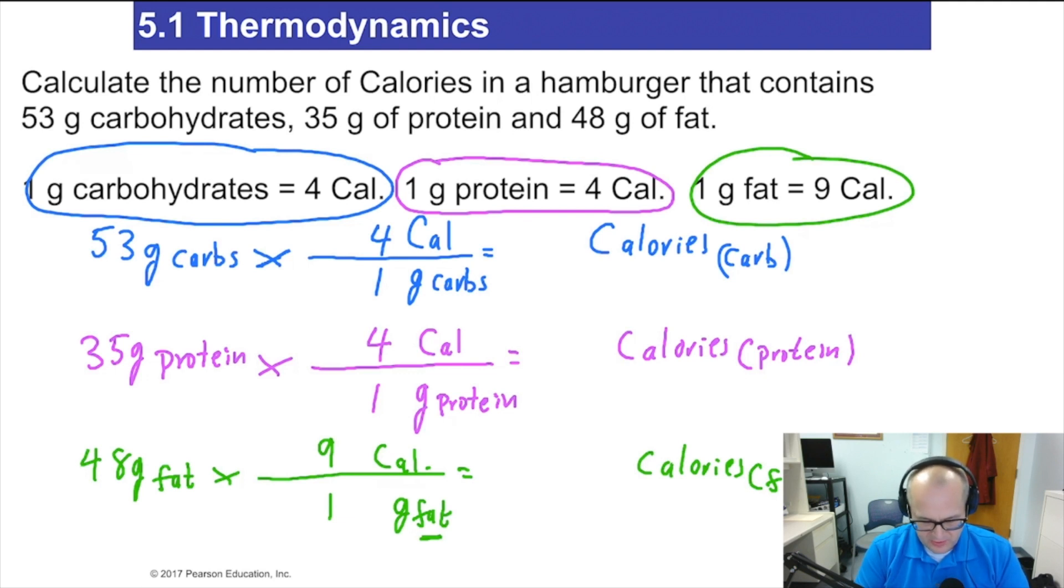Grab out your trusty calculator. 53 multiplied by four is 212. 35 multiplied by four is 140. 48 multiplied by nine, 432. And then add all these bad boys up. And it's right around 780 calories.